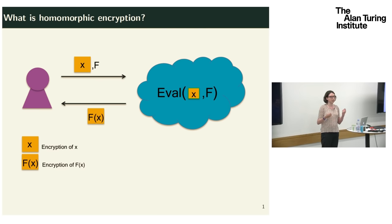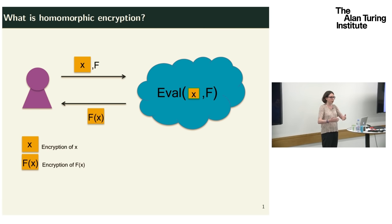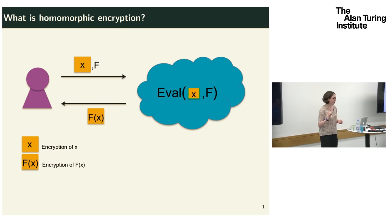The client sends the encryption of x and f over to the server, and the server runs this homomorphic evaluation function, taking as input the ciphertext encrypting x and the function f, and its output is an encryption of f of x — without needing the secret key. The server only learns an encryption of f(x), then sends it back to the client, who decrypts to recover f(x).